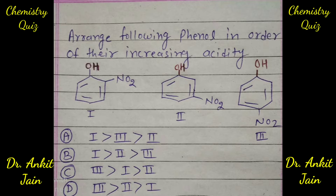The first structure is orthonitrophenol, the second structure is metanitrophenol, and the third structure is paranitrophenol.